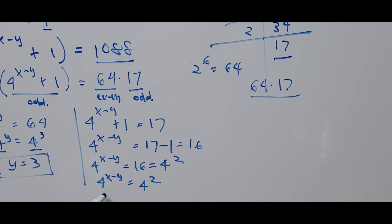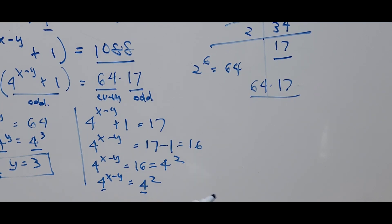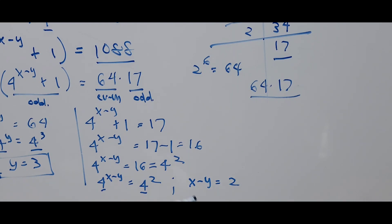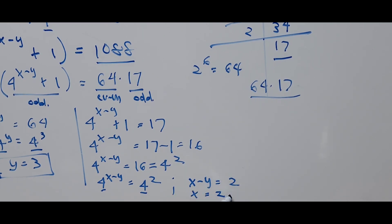Since we now have the same base on both sides, the exponents must be equal. So X minus Y equals 2. We already found Y equals 3, so transposing: X equals 2 plus 3, which gives X equals 5.